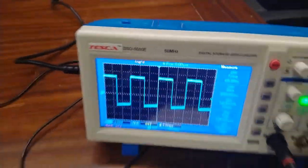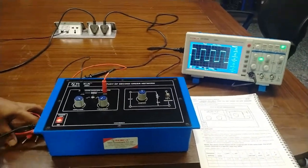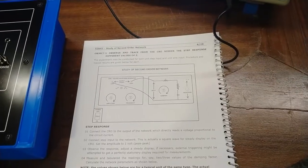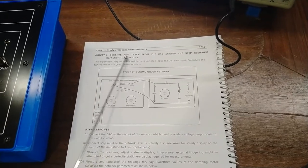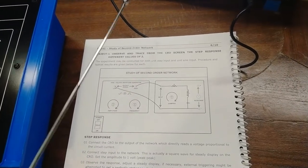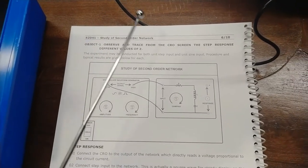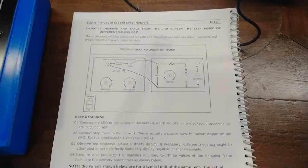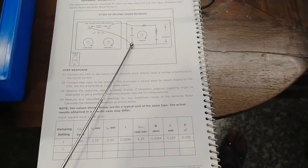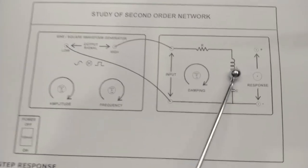These signals will be provided to our second order network circuit, and then we provide different damping values and observe the step response for different values of zeta. Now we are going to perform the first experiment, which is to observe and trace from the CRO screen the step response for different values of zeta. The experiment may be conducted for both unit step input and unit sine input.